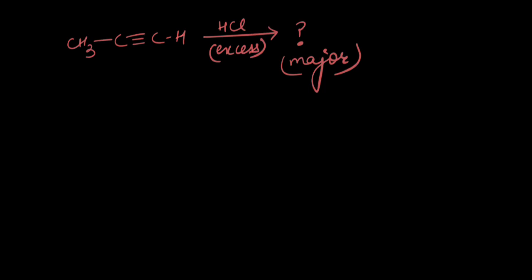We add excess HCl and need to figure out the major product. Why don't you try it yourself before we do it together? HCl, being polar, breaks as H+ and Cl- ions. The pi electrons would go and attack this H+ ion. What are the two possibilities?